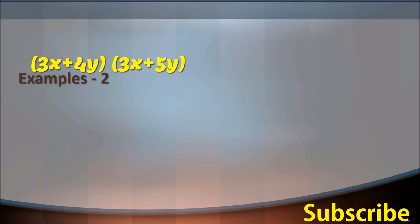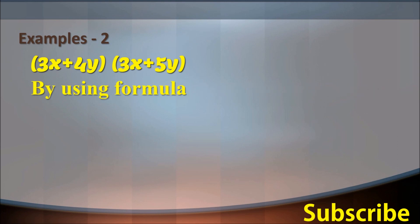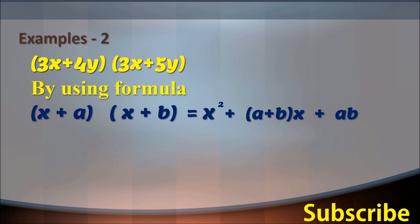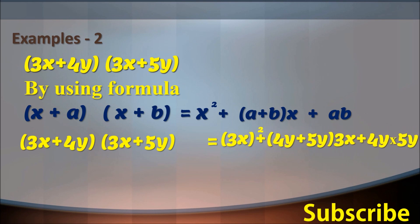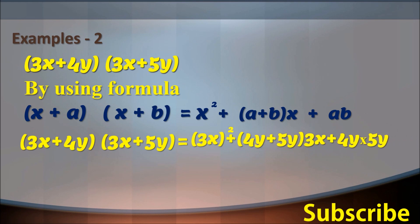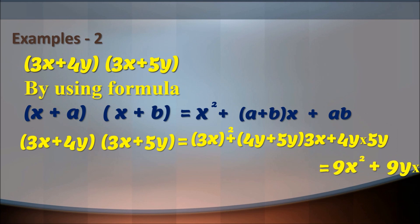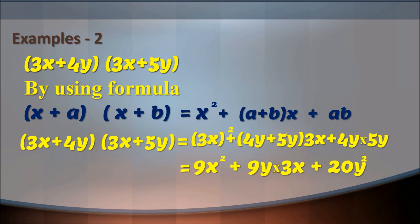Example two: 3x plus 4y into 3x plus 5y. Using the formula x plus a into x plus b equals x square plus a plus b into x plus ab. Answer: 3x whole square plus 4y plus 5y into 3x plus 4y into 5y, which equals 9x square plus 9y into 3x plus 20y square.